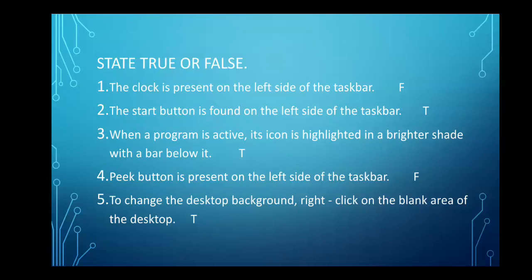When a program is active, its icon is highlighted in a brighter shade with a bar below it. True. Big button is present on the left side of the taskbar. False. It is present in the right most side.